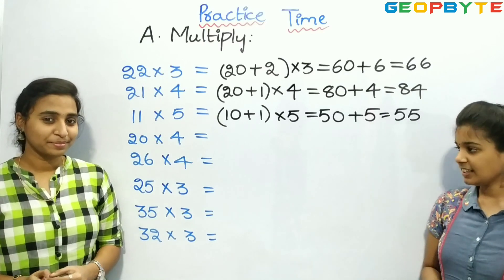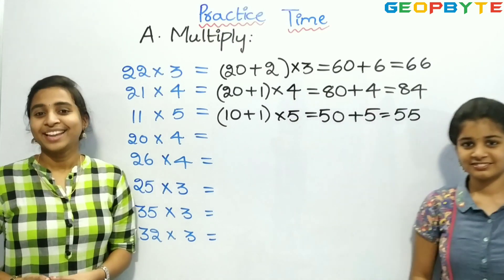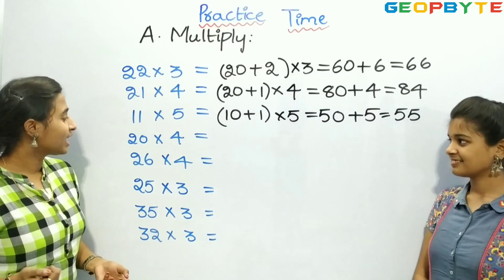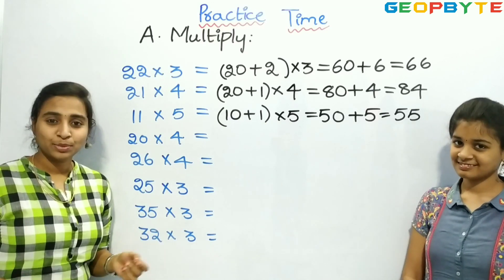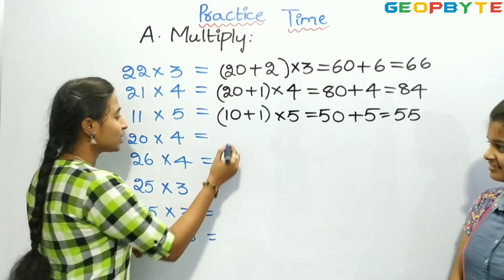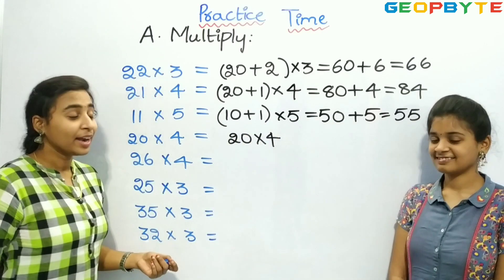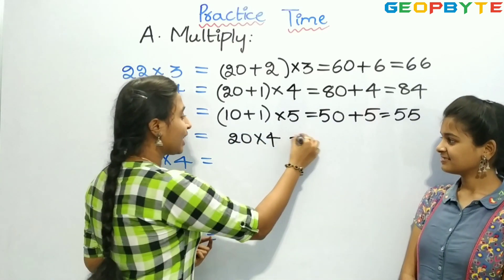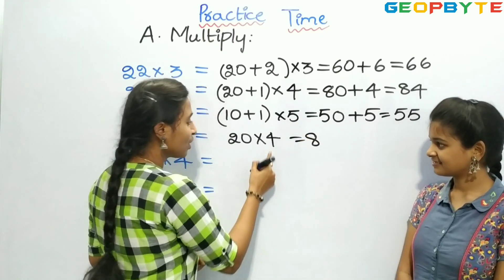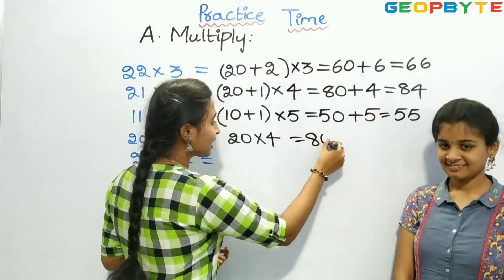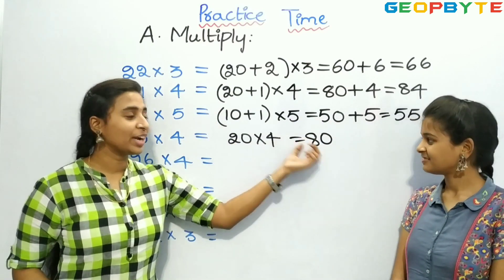Now let us see the fourth one: 20 into 4. Children, here we have 20 into 4. We need not split the number. Directly, 4 into 2 is 8, and 4 into 0 is nothing but 0. So 20 into 4 is equal to 80.